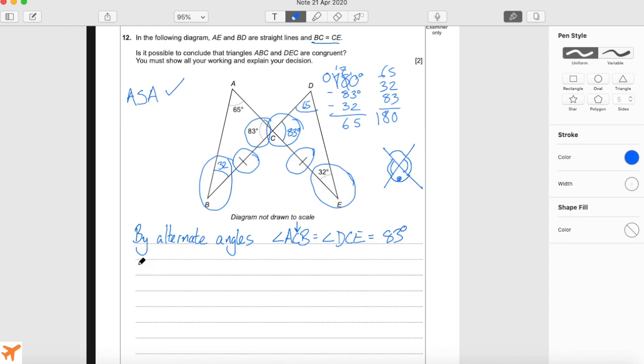We know that the sum of internal angles of a triangle equals 180 degrees. So angle ABC equals 32 degrees. Remember we said 180 degrees minus 65 minus 83 equals 32, which is this angle here.